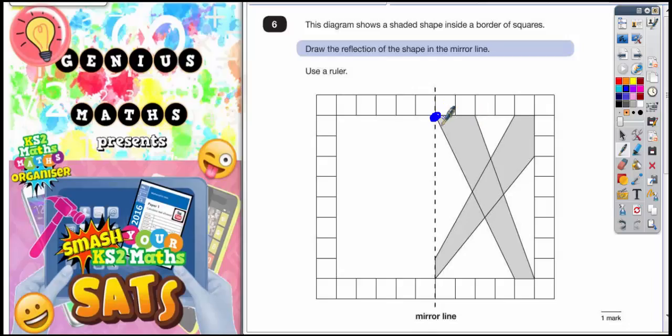This point is two squares away from that. So from the other side we need to come two squares away so that's going to be there. Now as you can see, that point and that point are symmetrical either side of the mirror line.